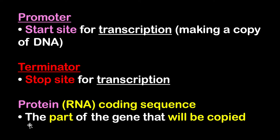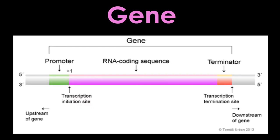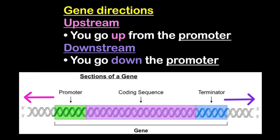Then we have the protein or RNA coding sequence. That's the part of the gene that will be copied. This area is what actually gets copied to make a protein. The promoter region and terminator region are just there for stopping and starting, but we don't copy those areas.